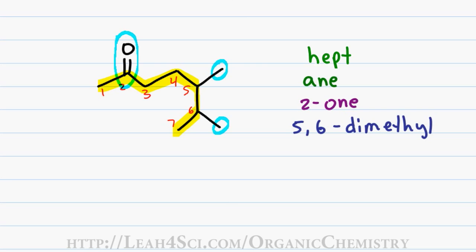When putting this name together, I have my prefix. I pull the number 2 in front of my first name and then last name allowing me to drop the E for a final name of 5,6-dimethyl-2-heptanone.